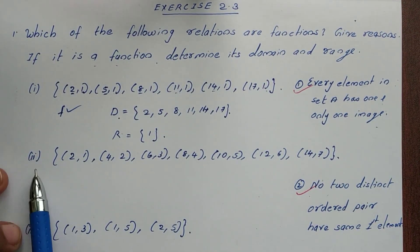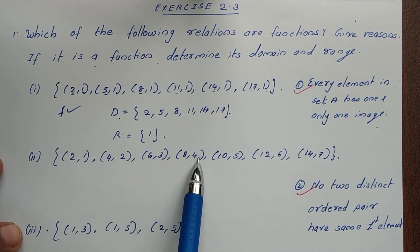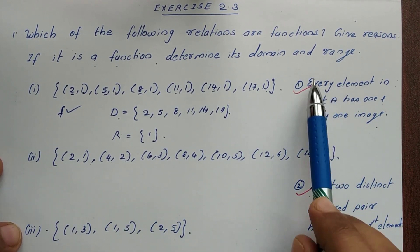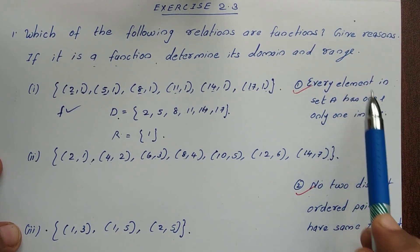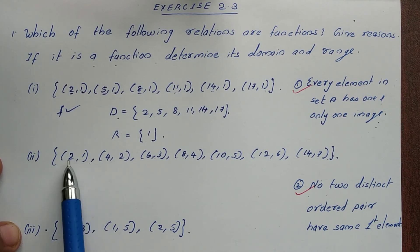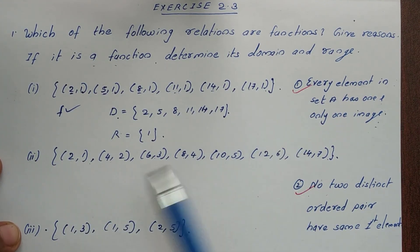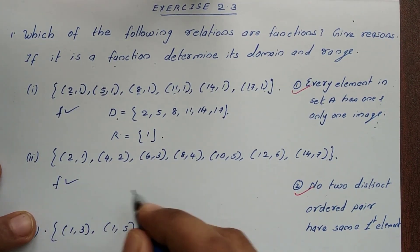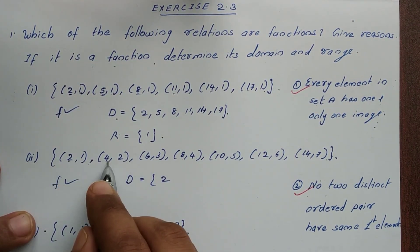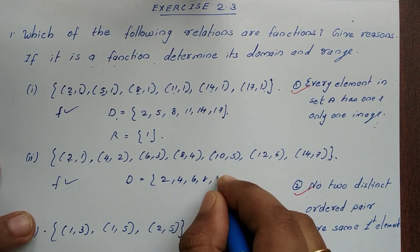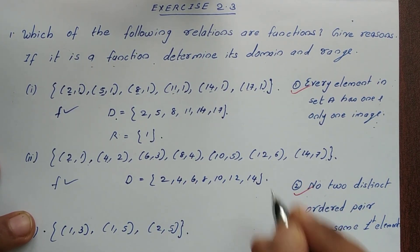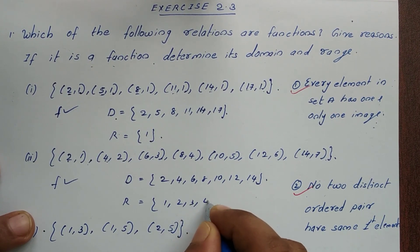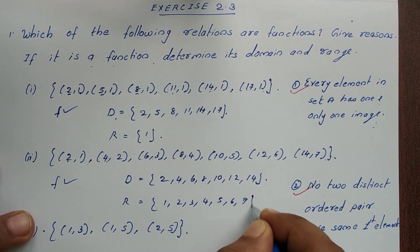Second question: the ordered pairs are (2,1), (4,2), (6,3), (8,4), (10,5), (12,6), (14,7). Every element has one image, so this is also a function. The domain is {2, 4, 6, 8, 10, 12, 14} and the range is {1, 2, 3, 4, 5, 6, 7}.